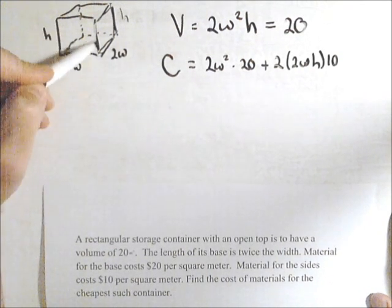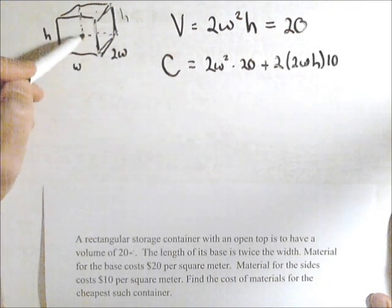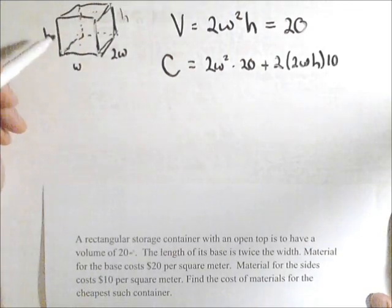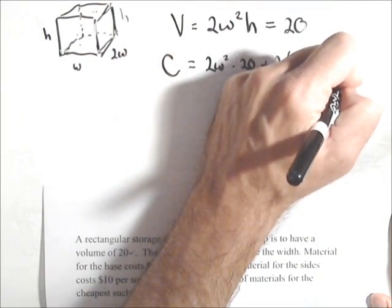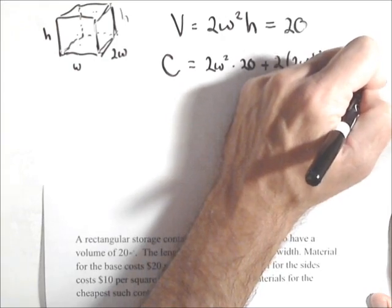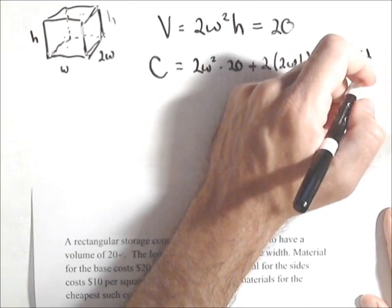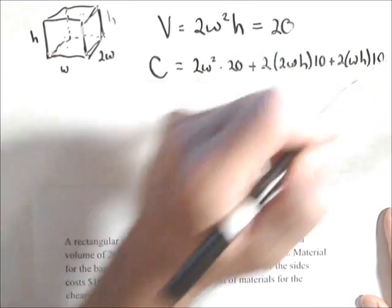Now this side is w times h. And again, there's two of them, one at the front and the back. So we have the two that are w by h. And those are also $10 per square meter.